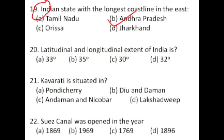The latitudinal and longitudinal extent of India is approximately 30 degrees. Kavaratti is situated in Lakshadweep and it is also the capital of Lakshadweep.